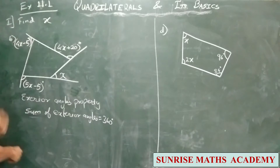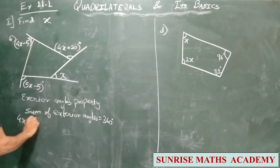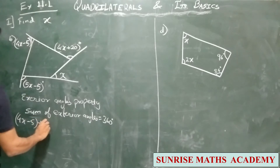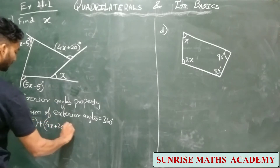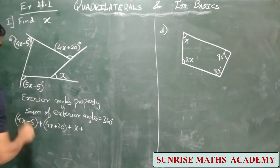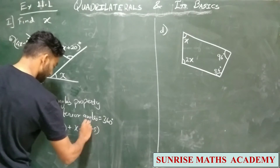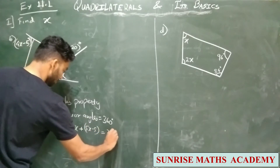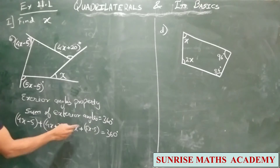Sum of exterior angles is 360. So here: (4X − 5) + (4X + 20) + (X) + (−4X) + (5X) + (5X − 5) = 360. We get this equation and now we have to add all the like terms. First, open the brackets.